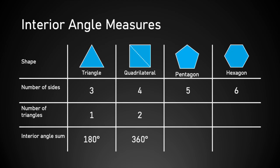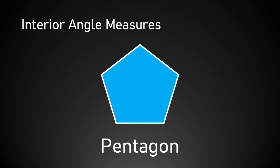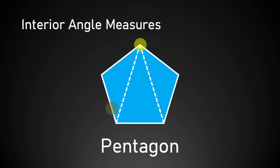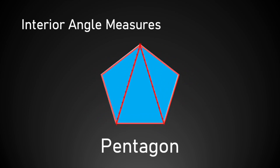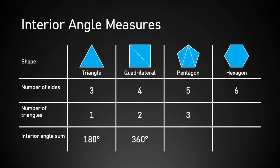Let's follow the same steps for a pentagon. Again, we can pick any vertex — I'm choosing this one — and draw every possible diagonal from it. I can't draw a diagonal to a consecutive vertex, but I can draw one to this vertex, then another diagonal to the next non-consecutive vertex. The next vertex is consecutive with the first one, so I'm done drawing diagonals. As you can see, I got three triangles out of it. Three triangles put together will have 180 degrees times 3, which is 540 degrees.